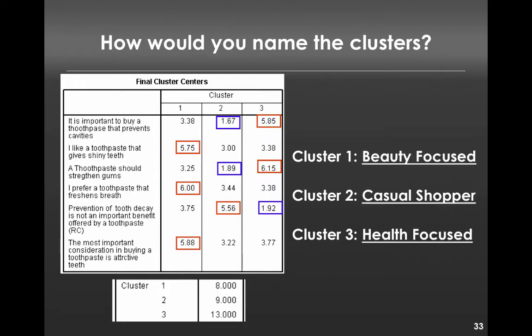For instance, the first cluster is beauty focused. They like toothpaste that gives shiny teeth. They prefer toothpaste that freshens breath. And the most important consideration of buying a toothpaste is attractive teeth.